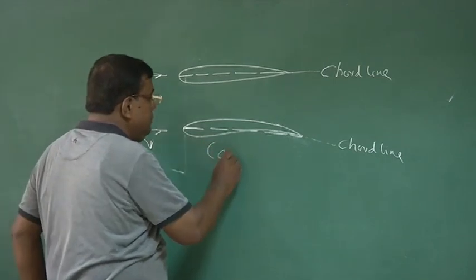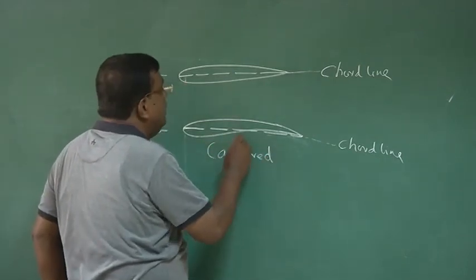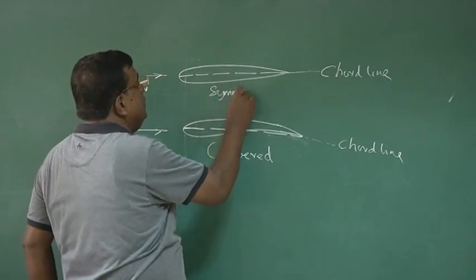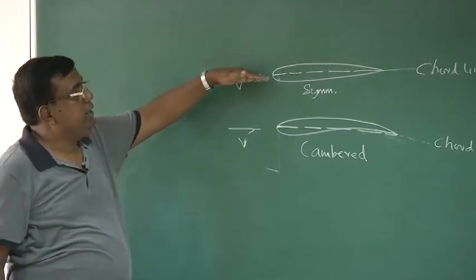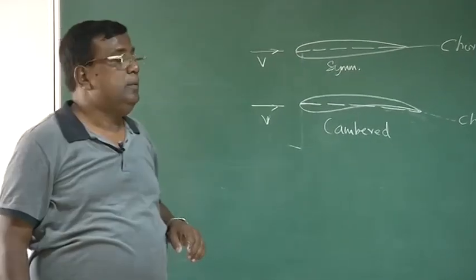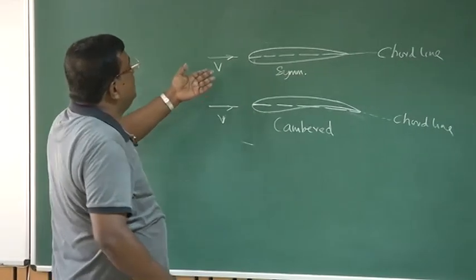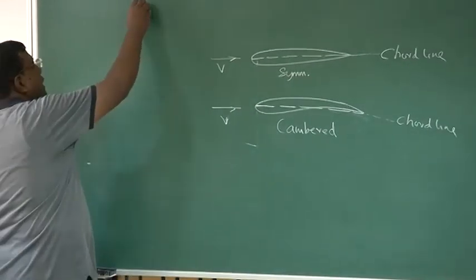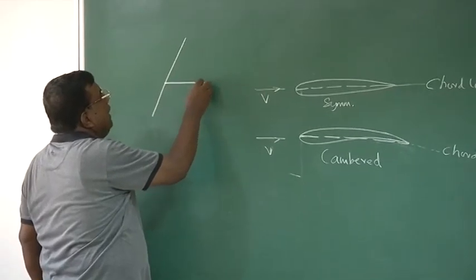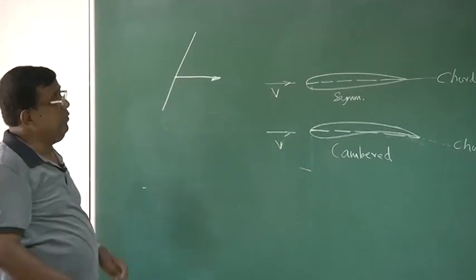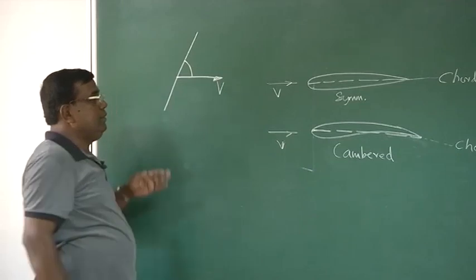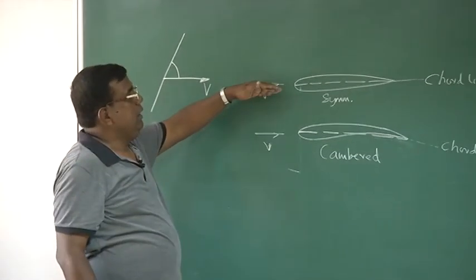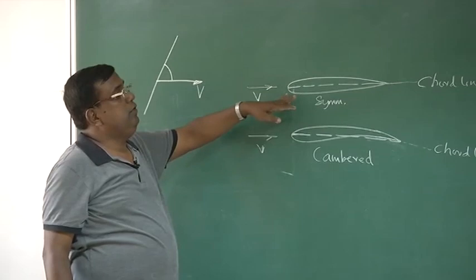This is cambered and this is symmetric. Now, if the air is coming like this, do you think this will produce any lift? The answer is no, because as per George Cayley's guideline on the concept of generation of lift: lift will be generated when there is an angle between the velocity and the surface. In this case, there is no angle, so it will not generate any lift.